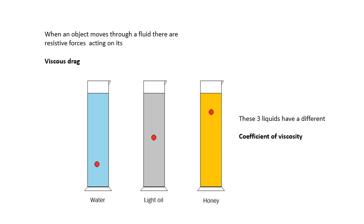A bit more about viscosity. When an object moves through a fluid, there are resistive forces acting on it, friction forces, retarding forces which try to slow it down or stop it moving. This is called viscous drag. In this experiment we're dropping a marble. We have measuring cylinders with different liquids: water, some kind of light oil like cooking oil, and then honey.